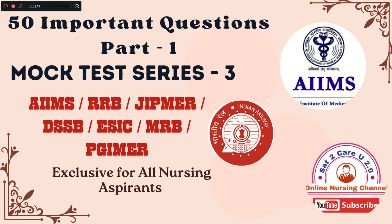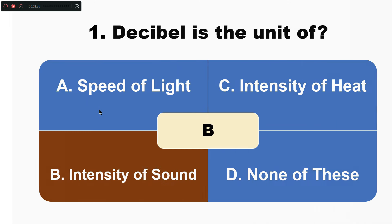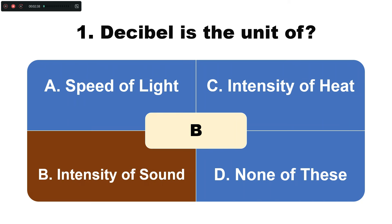The first question in the mock test: The decibel is the unit of — option A: speed of light, B: intensity of heat, C: intensity of sound, D: none of these. The correct answer is option C — the decibel is the unit of intensity of sound.